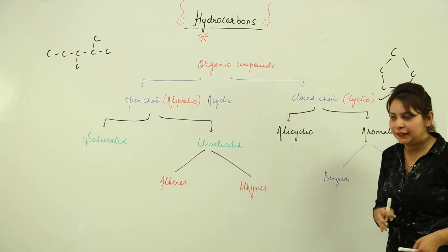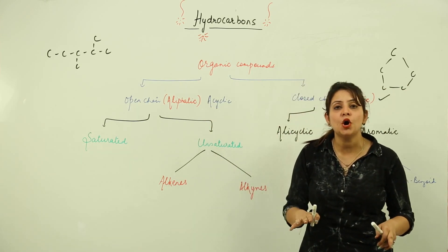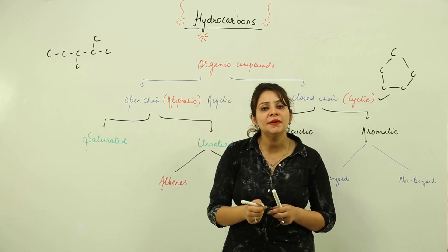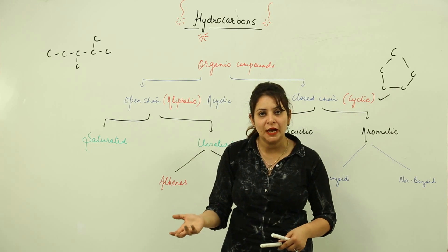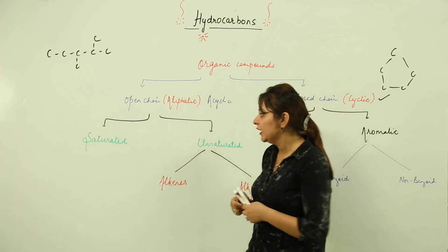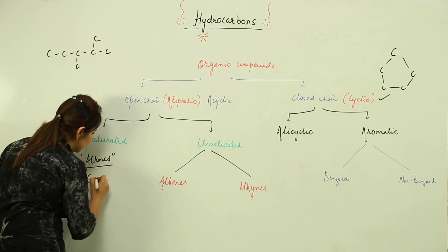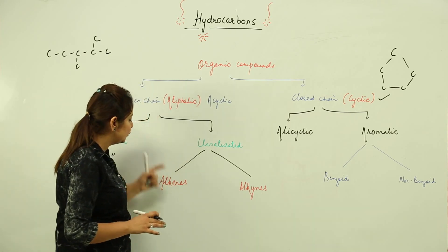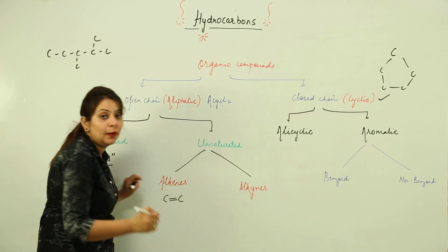A closed ring-like structure in which carbon is present is called a closed chain or cyclic structure. Aliphatic hydrocarbons are further divided into two categories depending on whether the bonding between carbon atoms is single, double, or triple. Carbon has the property to form a single bond, a double bond, or a triple bond with another carbon. On this basis, we divide them into saturated and unsaturated.